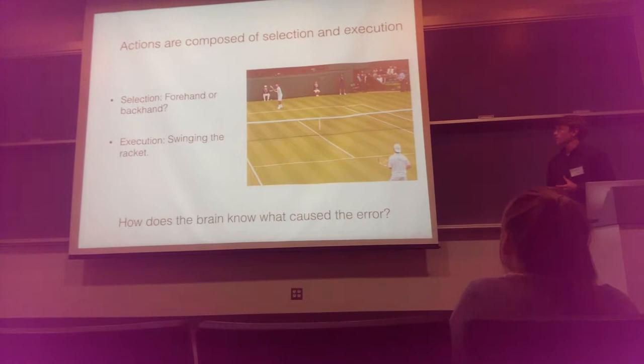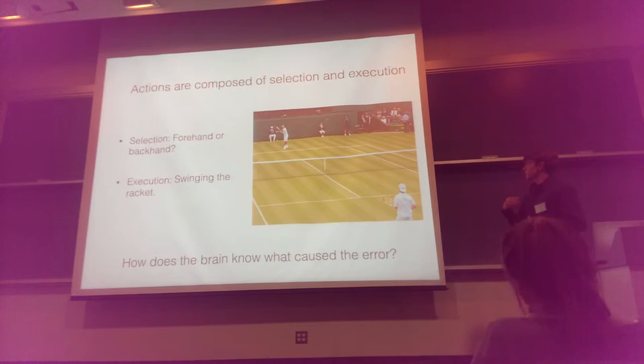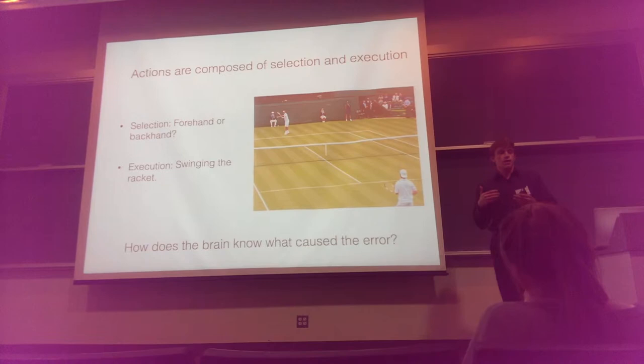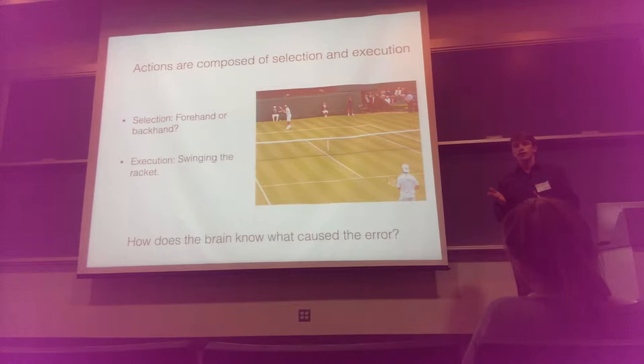A useful framework for thinking about motor actions is that actions are composed of both selection and execution processes. To make this more concrete, I'll be using the example of playing tennis. When playing tennis, the most immediate goal is to return your opponent's shot back from the other side of the court. We can think of this action as being composed of first a selection process — do I pick a forehand or a backhand? — and then an execution process, actually swinging the racquet and executing the shot.